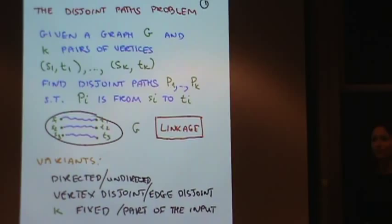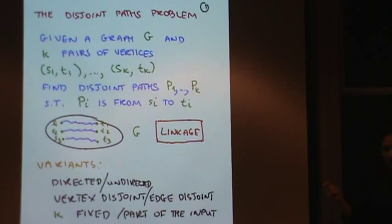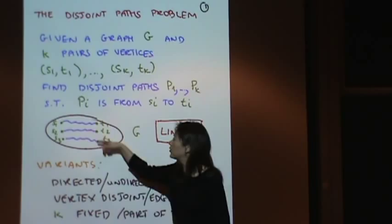Maybe a good way to think about it: imagine you operate a telephone company, and he called him, she called her, she called him, and you want to route the calls. It's not just enough to get all these connected. You need the correct person connected to the person they called, and you don't want the calls to interfere. So let me call a solution to such a problem a linkage. I have my pairs of terminals, and they are somehow appropriately connected to each other.